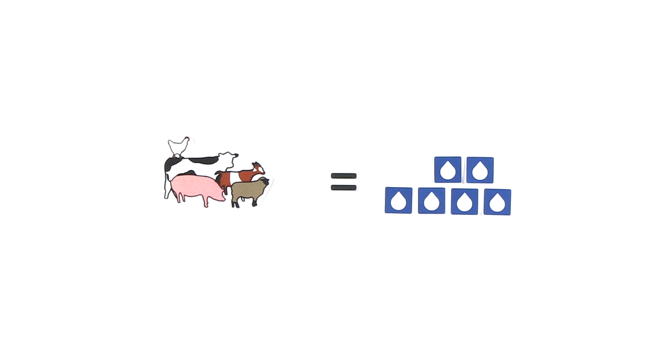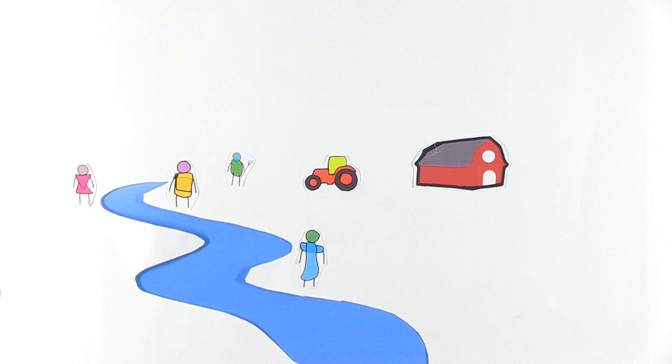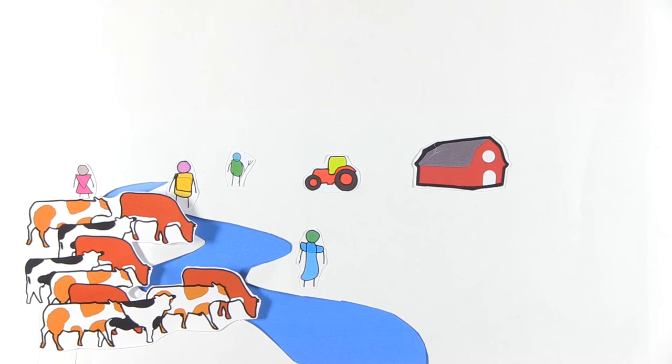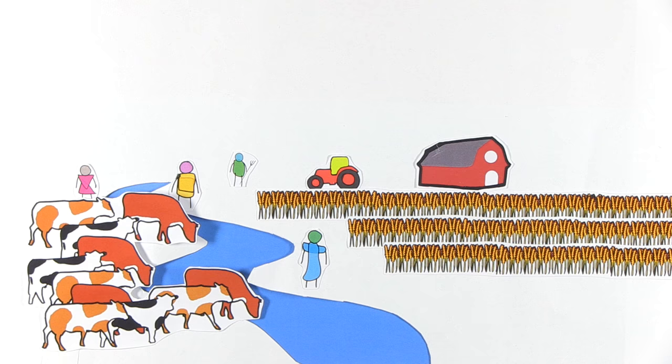Livestock requires large amounts of water to be produced. Water is diverted from rivers or taken from underground sources to support herds, either directly for drinking requirements or indirectly for irrigating the fodder production.